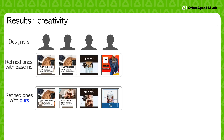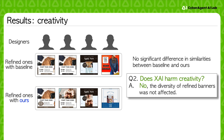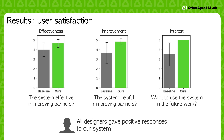Regarding creativity, we calculated the similarity between each pair of final banner designs. The findings were encouraging: using XAI did not reduce the diversity of designs, and designers were able to preserve their unique creative styles. We also analyzed user satisfaction through a questionnaire after the task, which showed that all participants gave positive responses to our XAI system.